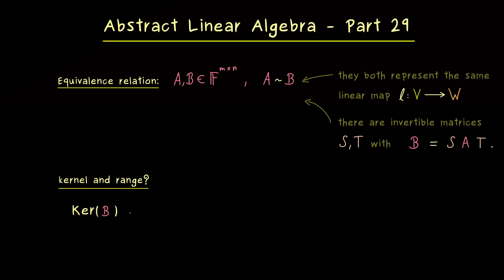And I would say, we can immediately check that for the kernel of the matrix B. And in the case that A is equivalent to B, we can immediately write this as the kernel of SAT, which is by definition the set of all vectors in F^n which satisfy that ATx equals the zero vector.